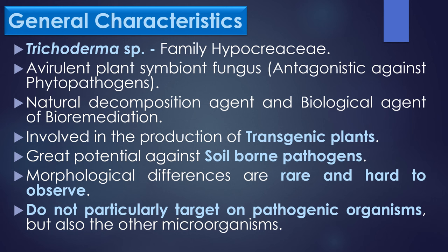First, general characteristics of Trichoderma species. Trichoderma is a genus of fungi in the family Hypochreaceae, and is commonly one of the rhizosphere inhabitants. Trichoderma species is a plant symbiotic fungus which acts as an antagonistic agent against many plant pathogenic fungi and offers protection from phytopathogenic plant diseases. The discovery of Trichoderma species as a natural decomposition agent and biological agent of bioremediation has been reported by several studies.